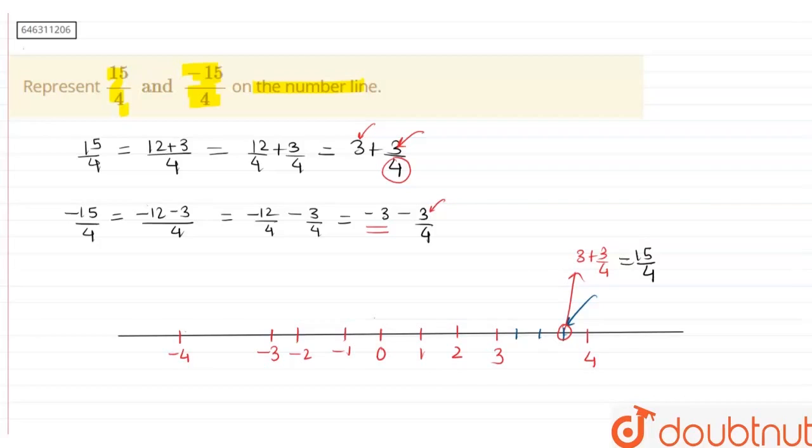Now, similarly, we are going to draw for -15/4. So, this is 1, 2, and 3. Now, we have to choose the third option, which will give us -3 - 3/4, which will be equal to -15/4.